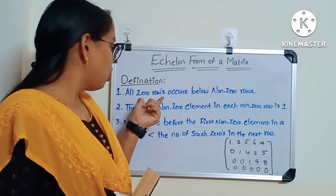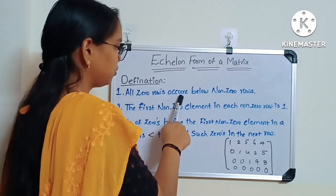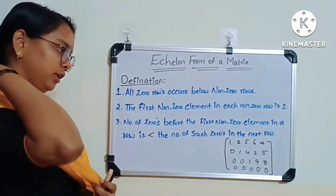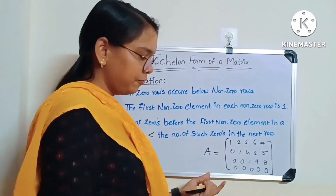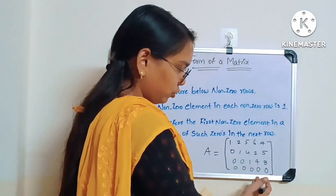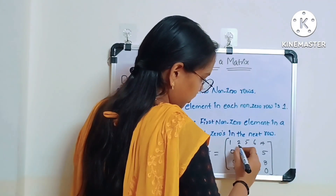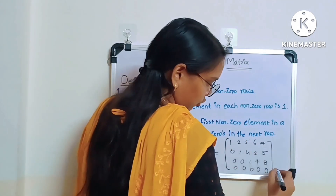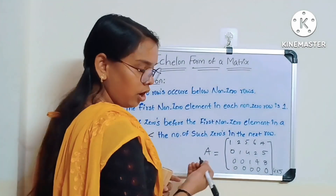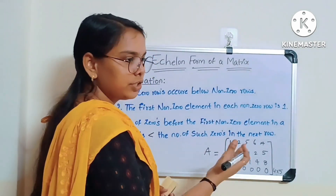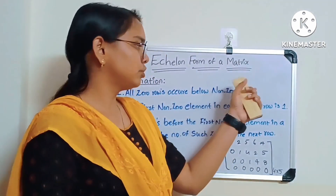The first condition is: all zero rows occur below non-zero rows. If you see matrix A here, there are four rows and five columns, so this is a four-by-five matrix. First, we check how many non-zero rows and zero rows are there. The first condition tells us that all zero rows must occur below non-zero rows.